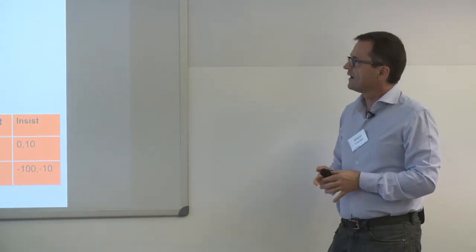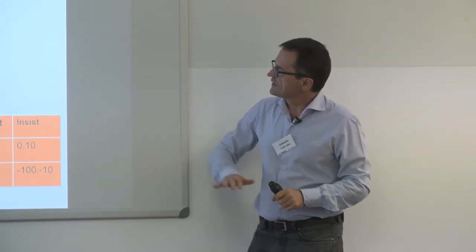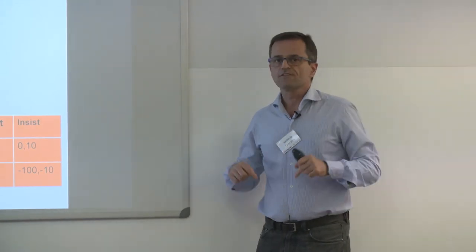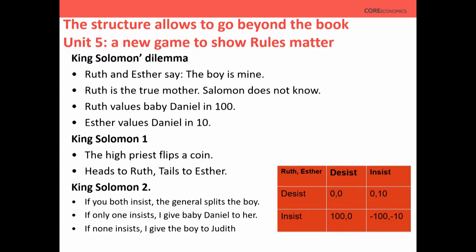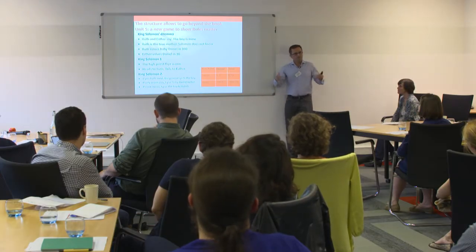Once you have the structure and all these tools, you can go beyond the textbook. In unit five I introduce a different game — not in the text — to show that rules matter. This is King Solomon's dilemma, a very interesting game used in the motivation for implementation theory. It goes back to a biblical story: King Solomon, supposed to be very wise, is presented with what is probably the first documented case of sudden infant death syndrome in human history.